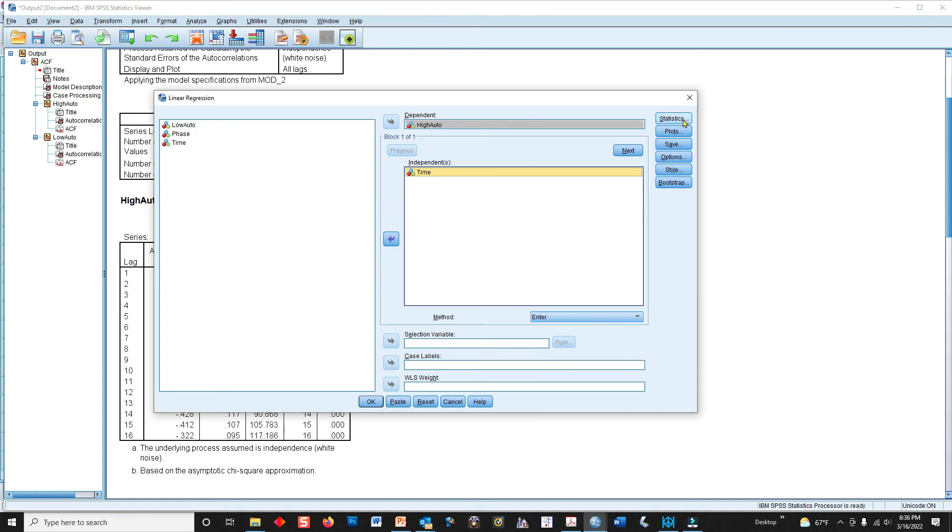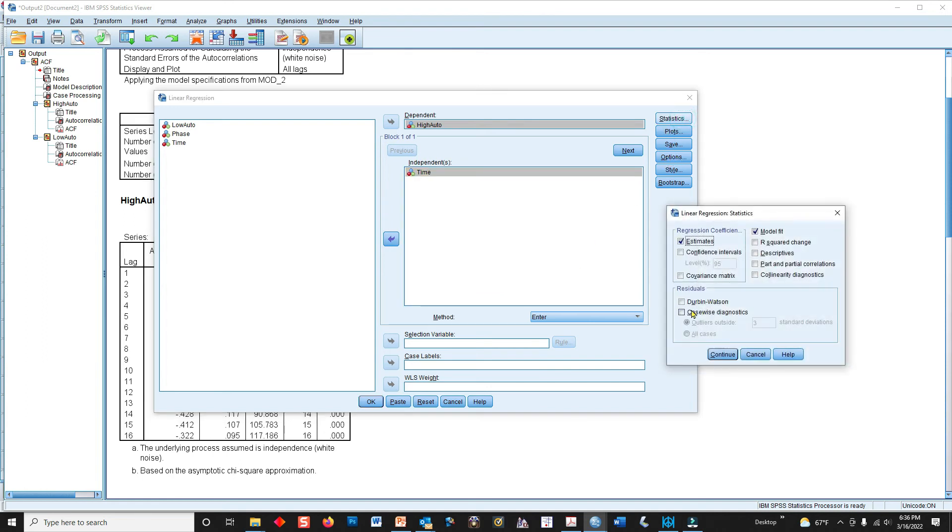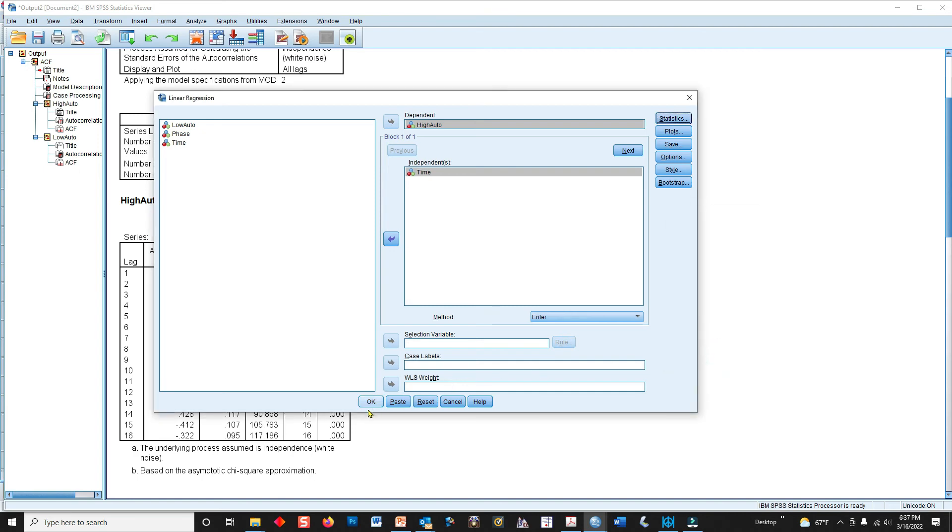And under option, or actually under statistics, we go over here, and you have to ask for the Durbin-Watson. It is not provided automatically. So that's the one that we want, and that's the only thing that we need here.